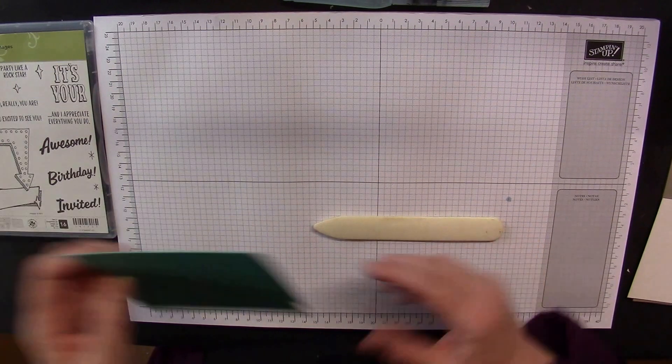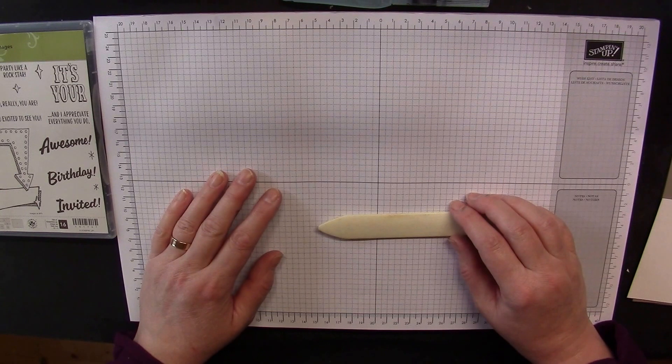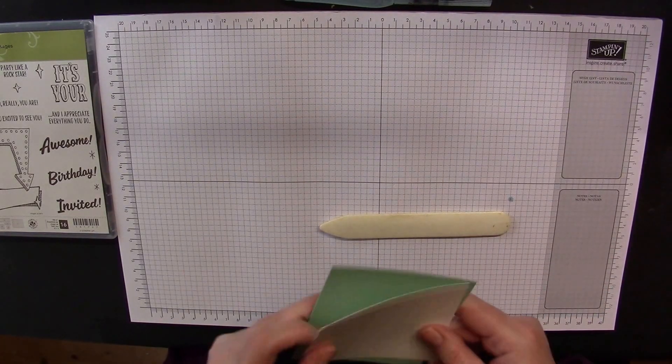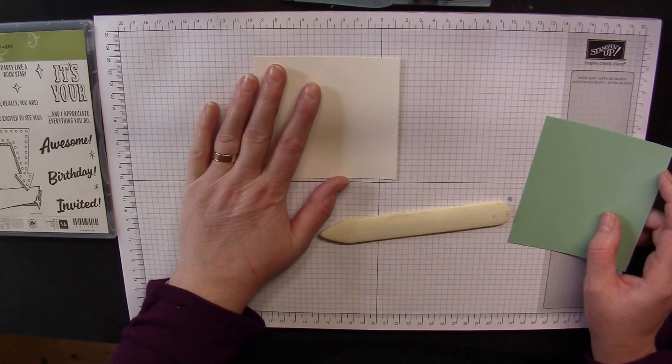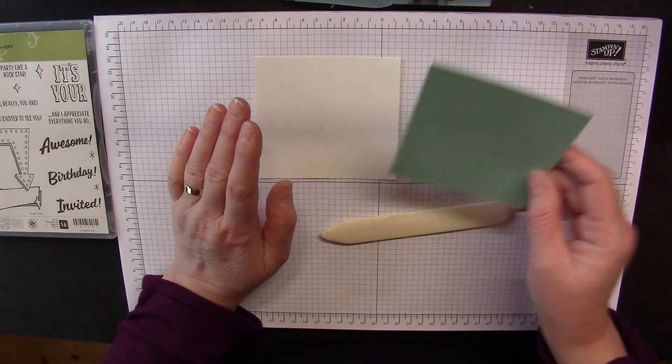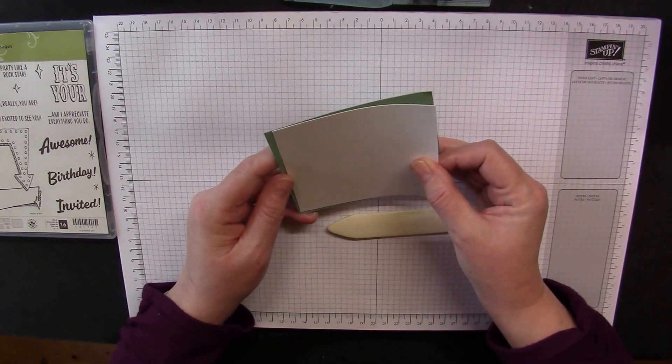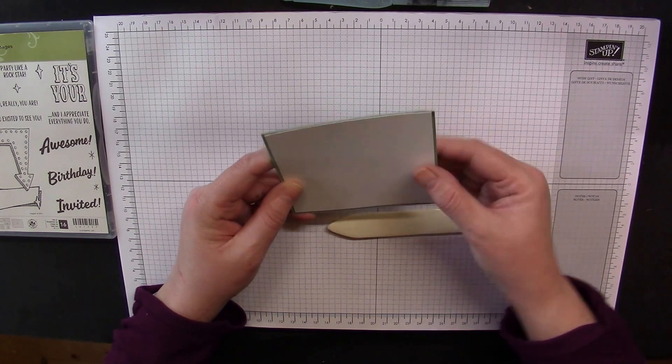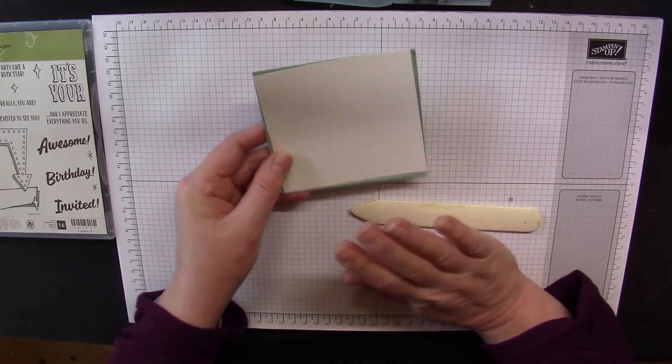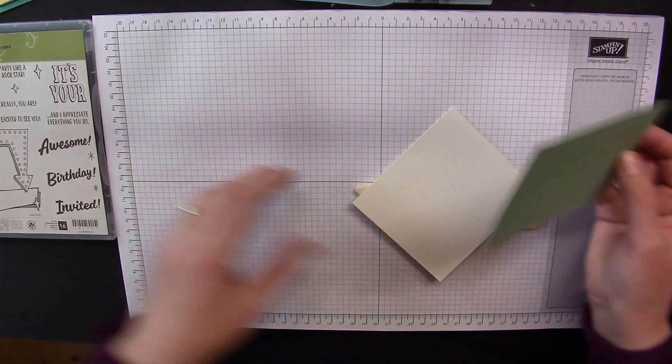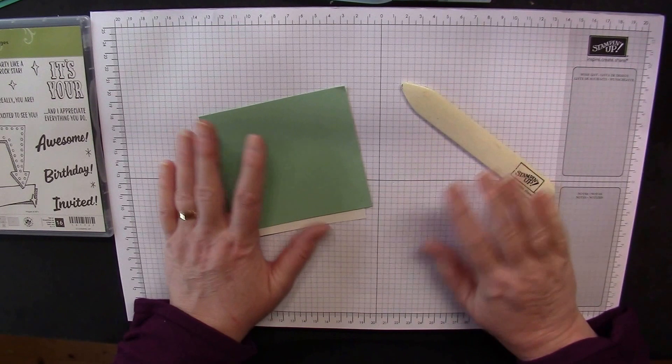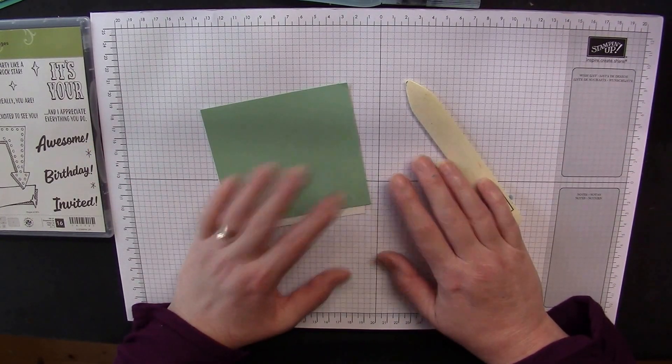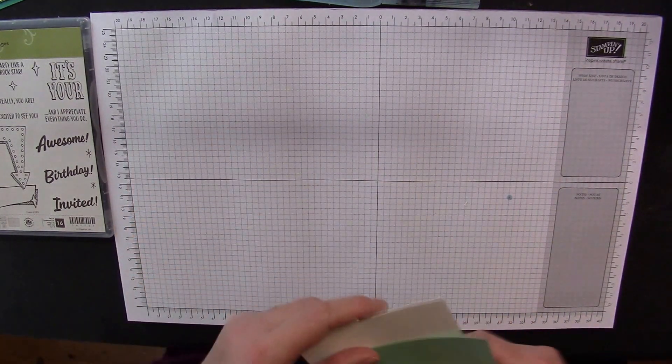Firstly, you're going to need an aqua painter. You obviously can't get the stamp set until the 1st of June, but I like to titillate you a little bit. You need a piece of Bermuda Bay cardstock which measures 30cm by 10.5cm, and then you score through the middle at 15cm, fold and burnish. All of the sizes as usual will be on my website.